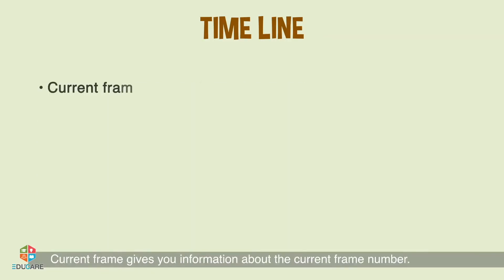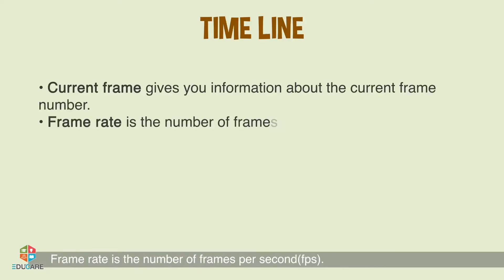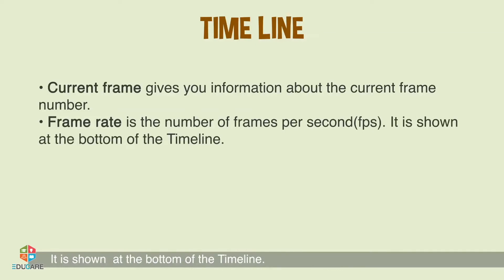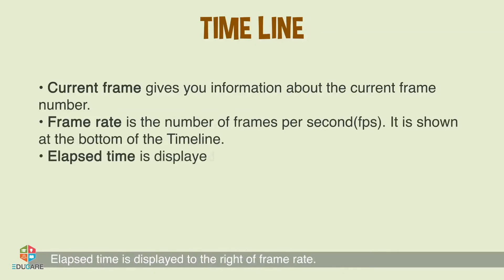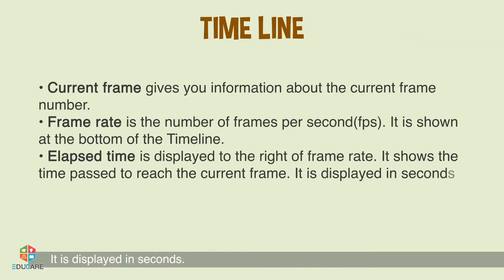Current frame gives you information about the current frame number. Frame rate is the number of frames per second, i.e., FPS. It is shown at the bottom of the timeline. Elapsed time is displayed to the right of the frame rate. It shows the time passed to reach the current frame and is displayed in seconds.